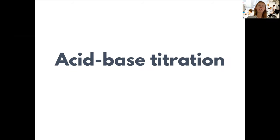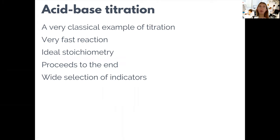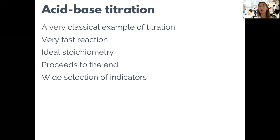Welcome back to the titration lectures. In this lecture we are now going to look more specifically into acid-base titration. Acid-base titration is a very classical example of titration reactions. They are very widely used today in food analysis — for example, determining total acidity of wine samples — but also in other kinds of total acidity determinations in food matrices, and widely used for standardization in the chemical industry and many other applications.